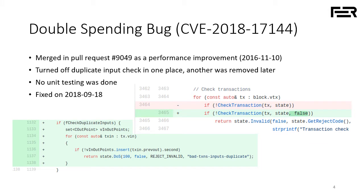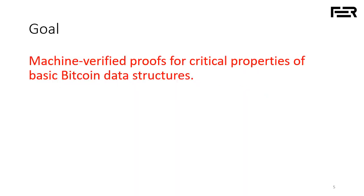As an example of an implementation bug, a series of changes to the official Bitcoin client made double-spending possible for a significant period of time in 2018. The particular issue had to do with checking that you don't spend the same coin twice inside the same transaction. Basically, at some point in 2016 this check was performed twice: first in the context-independent transaction validity checks, and then again when the transaction was actually processed and added to a block. One developer turned off one chunk thinking it was redundant for performance optimization, and then later in 2018 another developer refactoring the second piece of code removed the other check, resulting in a very serious bug.